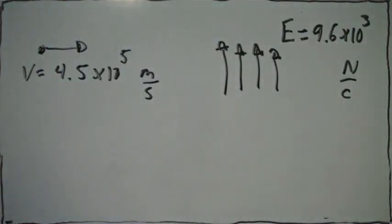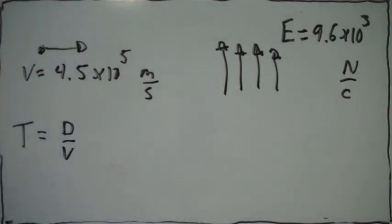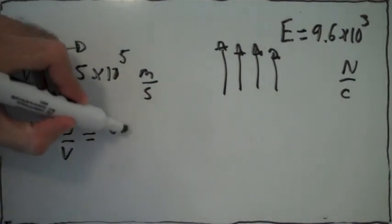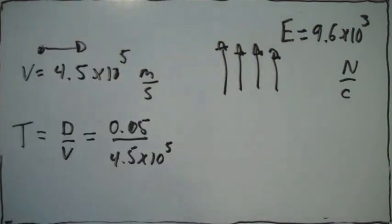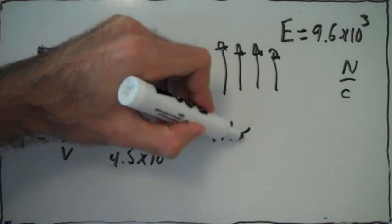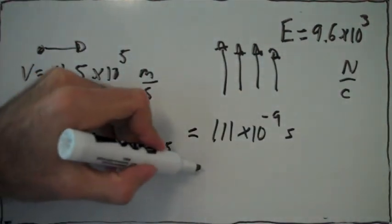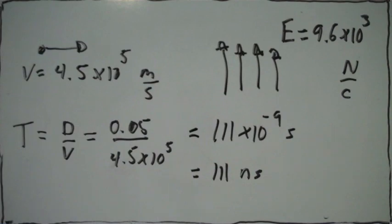What they ask is how long it's going to be before the proton travels 5 centimeters in the horizontal direction. The time is distance divided by velocity. The distance is 0.05 meters, and that's the velocity at which it's moving horizontally. So we can calculate the time that it takes for the proton to move 5 centimeters horizontally.